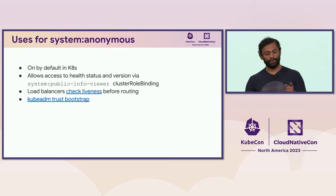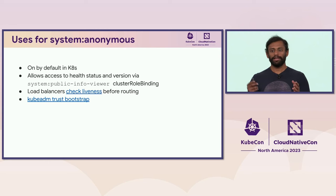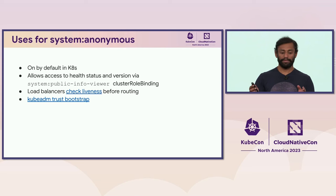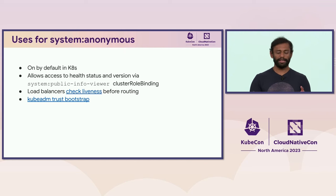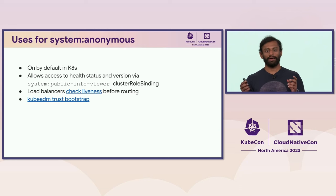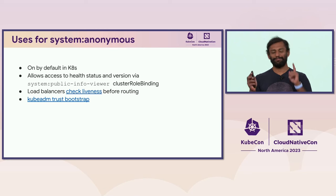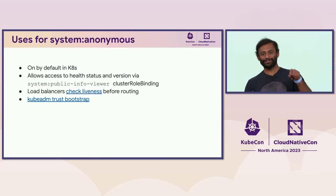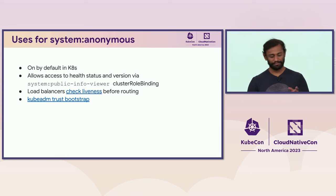You might be thinking, why does system:anonymous exist? It's on by default in Kubernetes, and Kubernetes creates a binding called system:public-info-viewer which lets you look at health status and cluster versions. A lot of load balancers use this. KubeADM also relies on this for private key information exchange during cluster bootstrap. And if you watch the demo by SIG auth, they were also using this for checking healthz. So there are valid scenarios where system:anonymous and system:unauthenticated can be used.